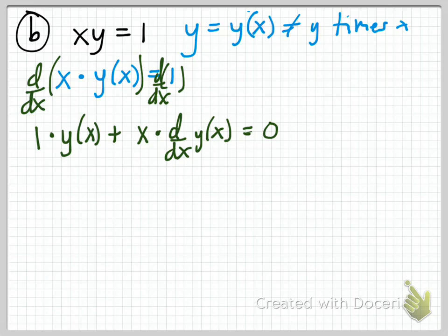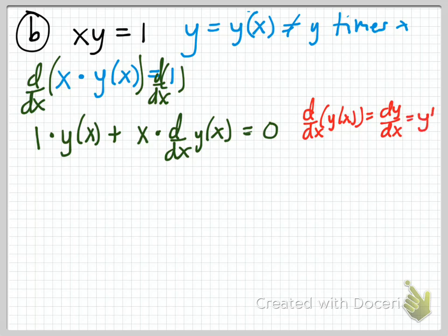Now recall that d/dx of y of x can also be written as dy/dx, and dy/dx we can write as y prime. Using that notation, y of x is just y, and the d/dx of y of x is y prime. So simplifying, we get y plus x times y prime equals zero.